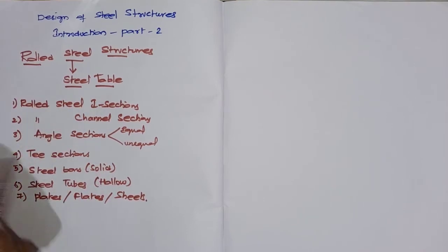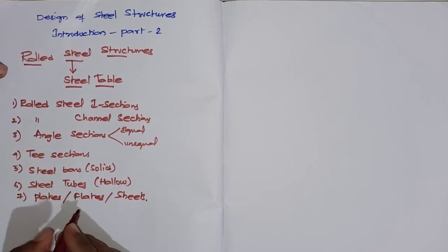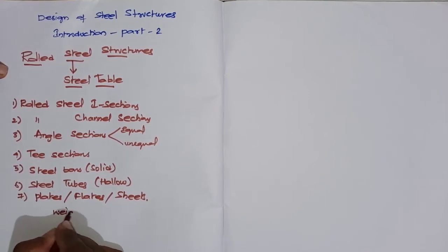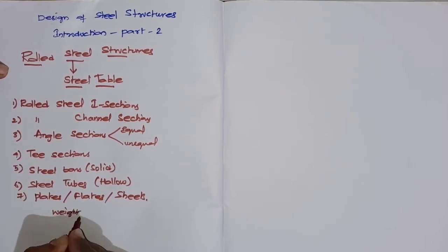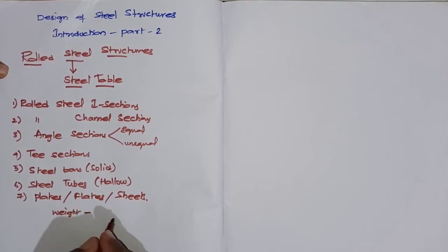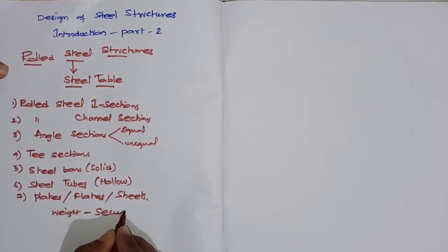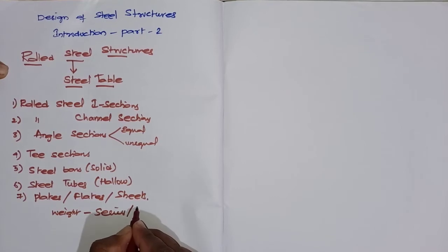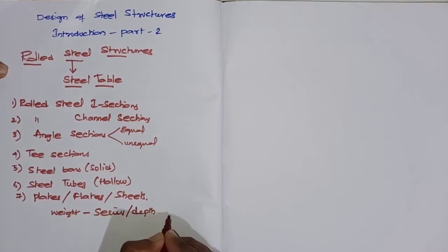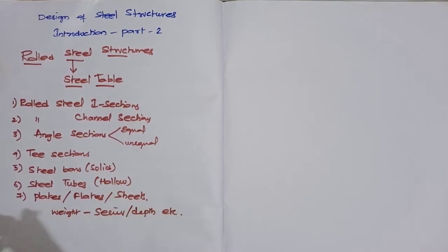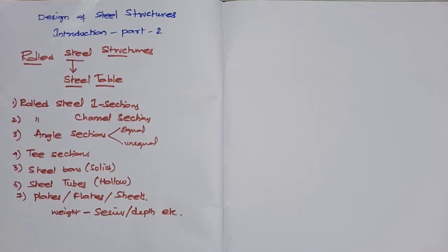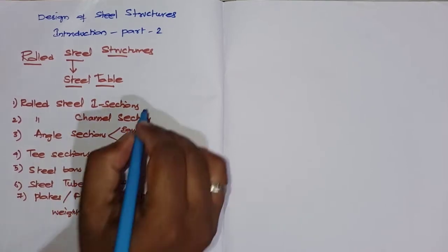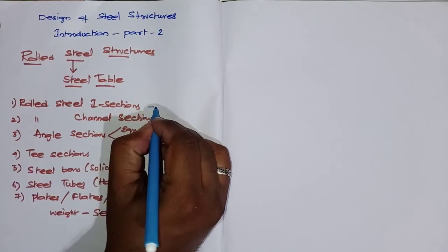These sections are designated with respect to weight, series, depth, and so on. These are the designations of the rolled steel sections. Coming to I-sections, these are used as beams, and channel sections are also commonly used structural members.